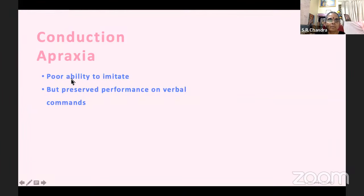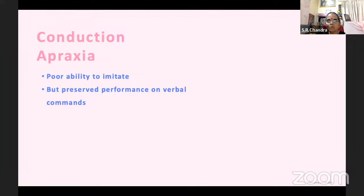Conduction apraxia is poor ability to imitate but preserved performance on verbal command. You show a movement and the patient cannot imitate it, but tell him verbally 'show me how you drink a cup of coffee' and he will do it. Seeing somebody else do something and then imitating uses different circuits from acting on verbal command — that is conduction apraxia. Constructional apraxia is inability to do construction — impairment in combining or organizing activity where details and relationships of component parts must be clearly perceived. It can occur in both dominant and non-dominant lesions.